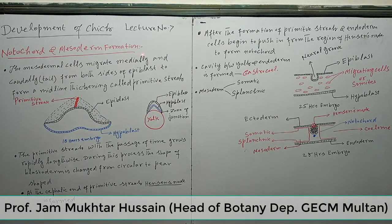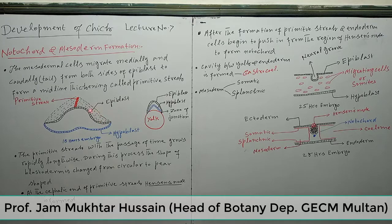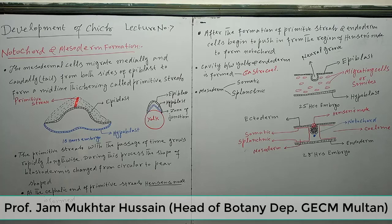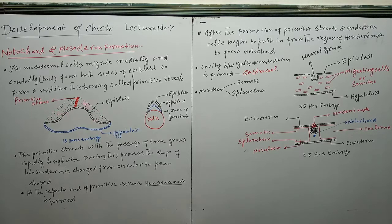The mesodermal cells migrate medially and caudally from both sides of the hypoblast to form a midline thickening. This midline thickening is known as the primitive streak. Streak means a streak or stripe. From both sides of the hypoblast, cells migrate toward the midline and form this midline thickening called the primitive streak.